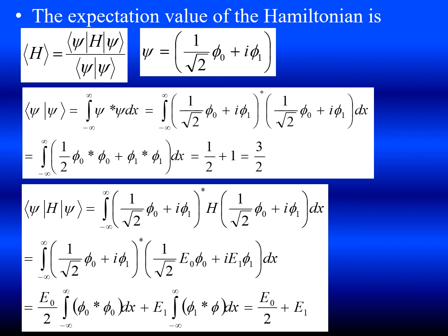When the Hamiltonian H acts on phi naught, you get E naught phi naught because it has eigenvalue E naught. When H acts on phi 1, it gives E1 phi 1. After multiplying and rearranging, we get E naught by 2 plus E1.